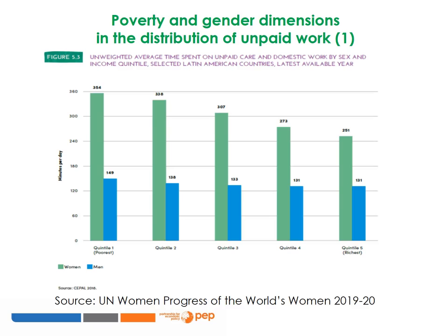The most interesting insight from this graph is that while the average time men spend on unpaid work remains more or less the same across income quintiles, this is not at all the case for women. Women in any quintile spend more time than men on unpaid work, but women in the poorest quintile spend much more time than women in the richest quintile. This is likely explained by the fact that women in the poorest quintile have more limited access to household infrastructure that can reduce the drudgery of unpaid work, such as piped water and electricity.